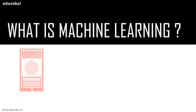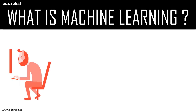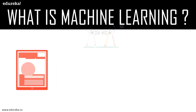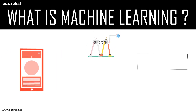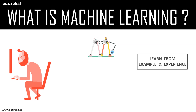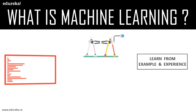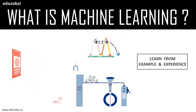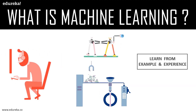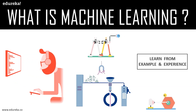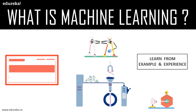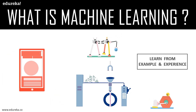Machine learning is a type of artificial intelligence that allows software applications to learn from data and become more accurate in predicting outcomes without human intervention. It is a concept which allows the machine to learn from examples and experience without being explicitly programmed.